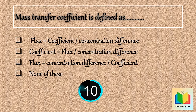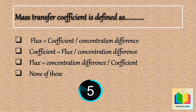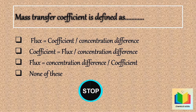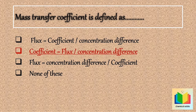10, 9, 8, 7, 6, 5, 4, 3, 2, 1. Stop. So the answer is: Coefficient is equal to flux divided by concentration difference.